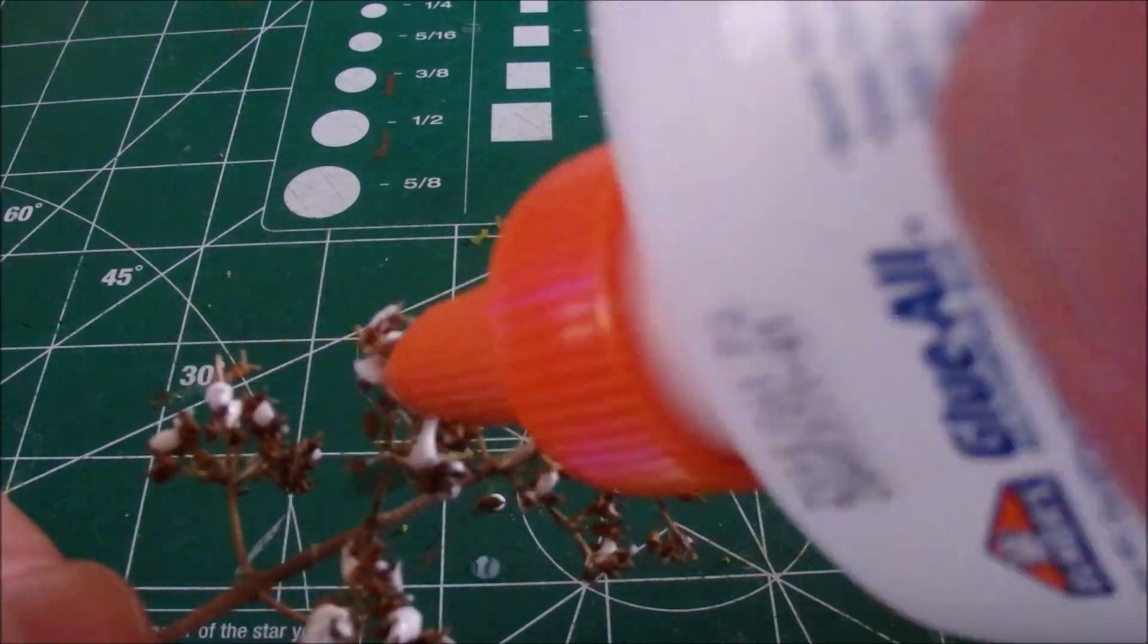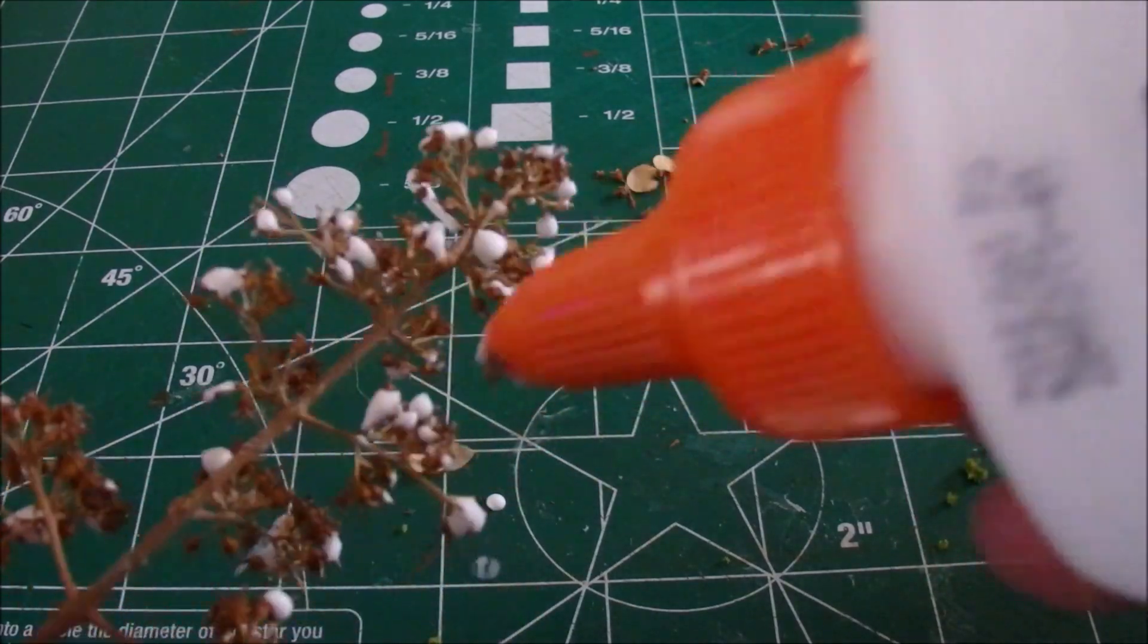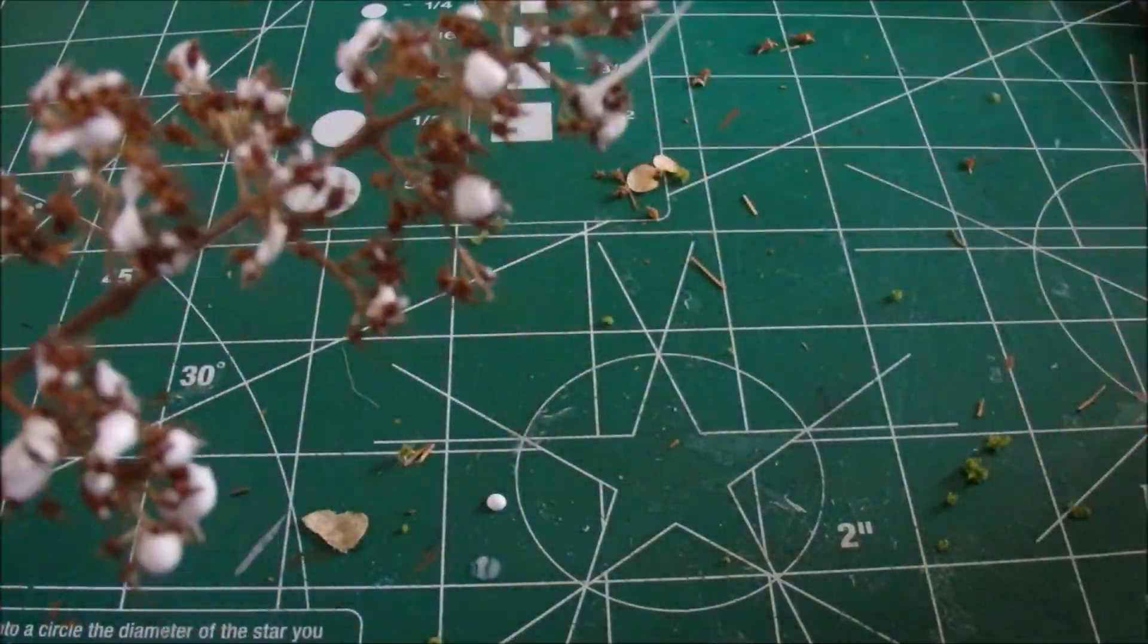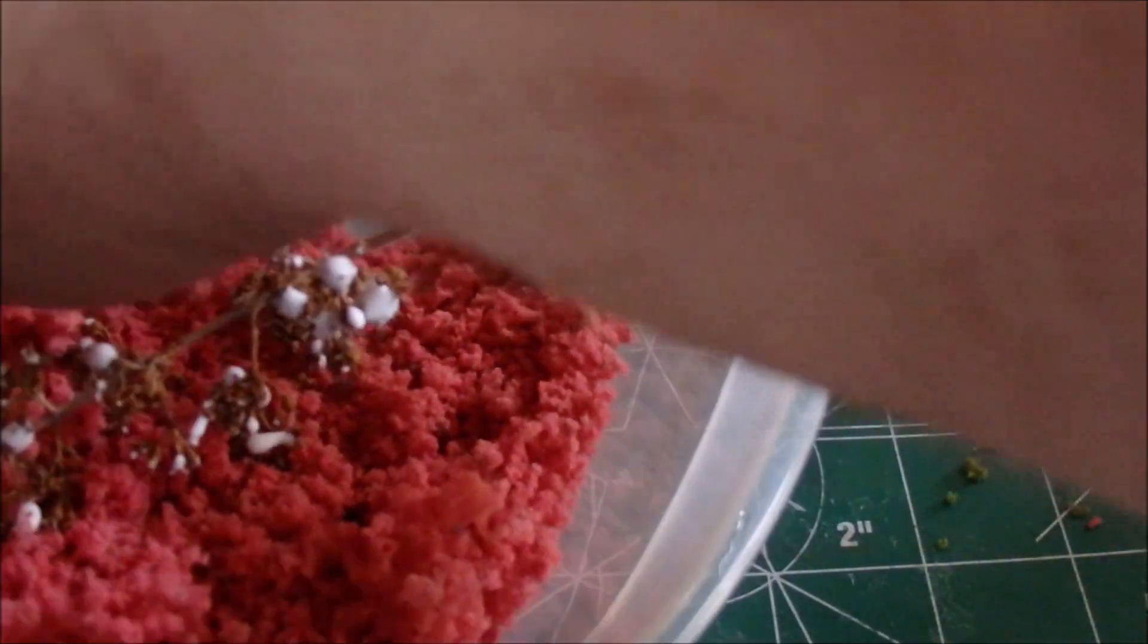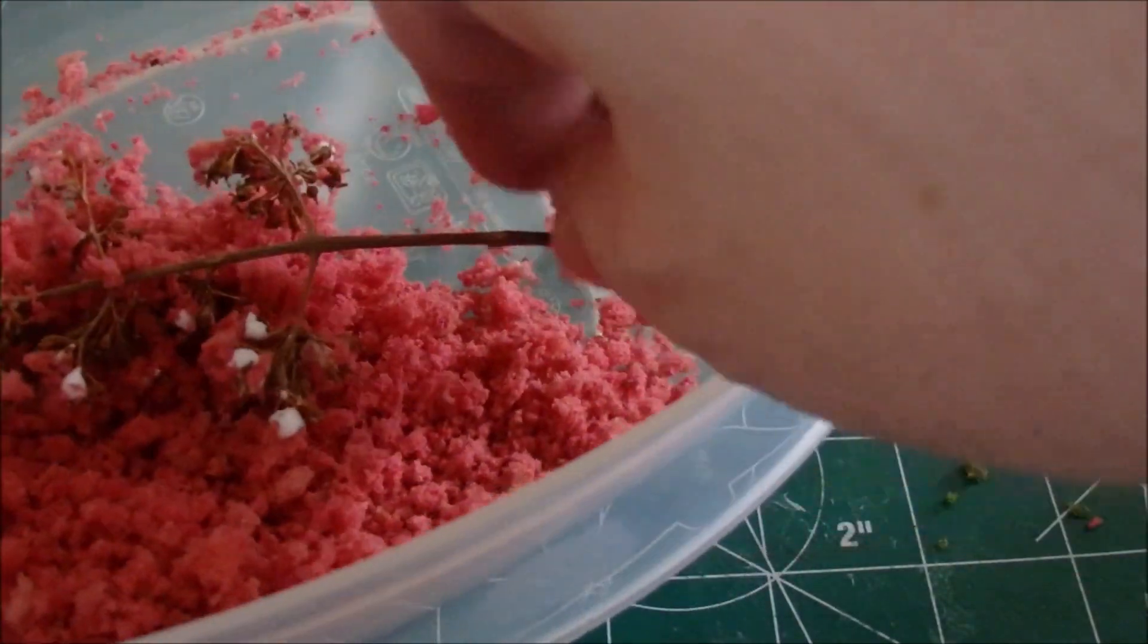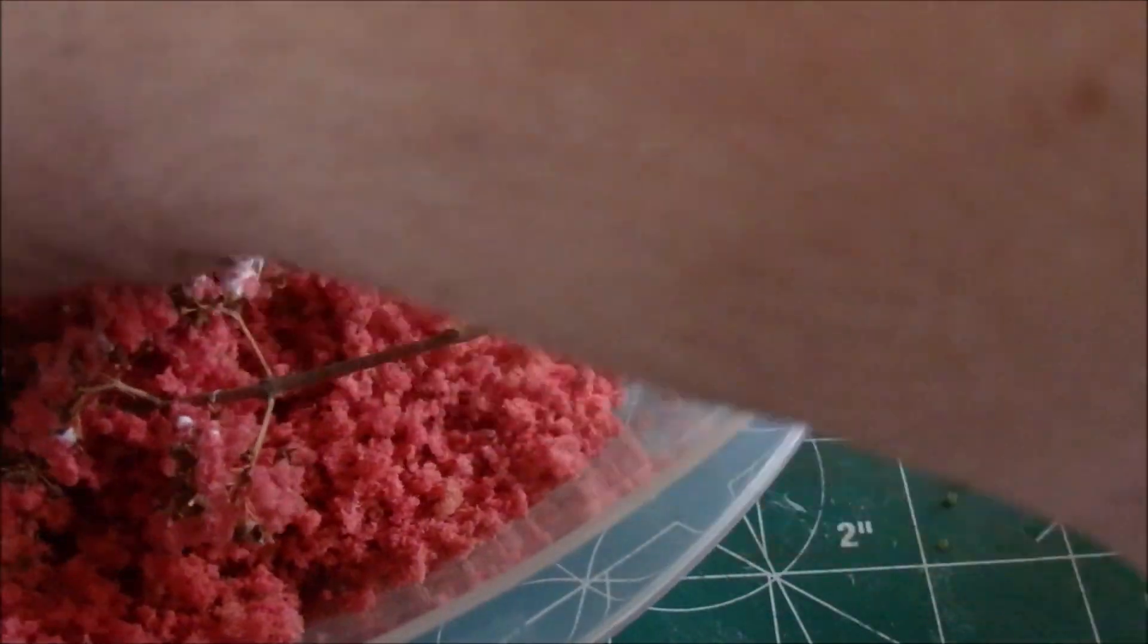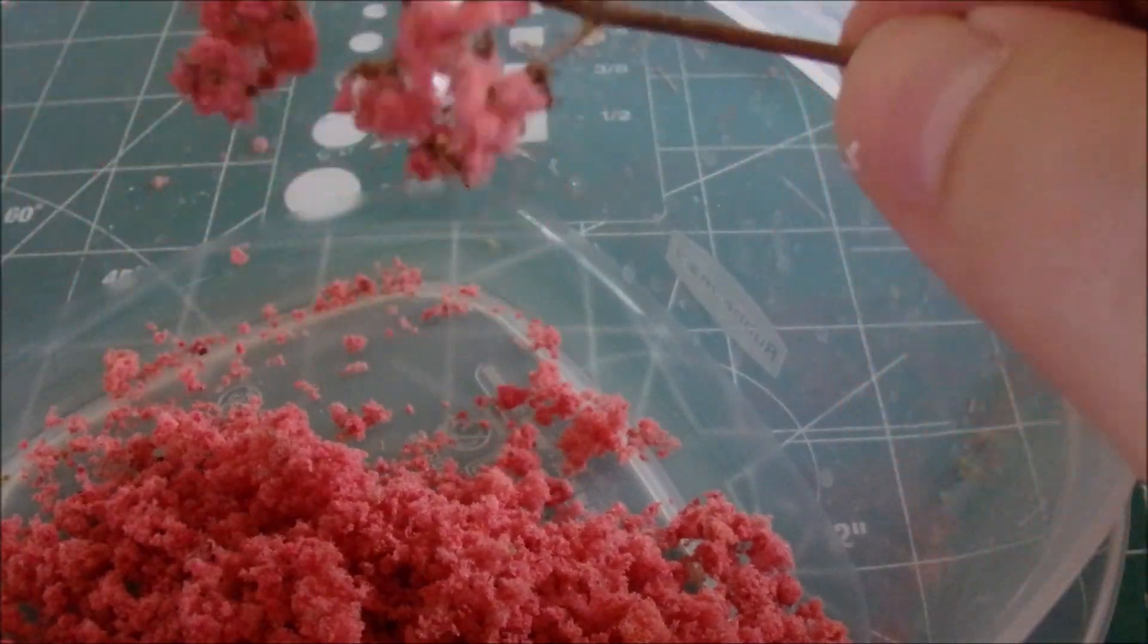This tree turned out looking like maybe some of the leaves had already fallen, maybe a little bit later fall look to it. Once you do get the foliage on there, the ground foam doesn't quite cover everything and not everything sticks on it so it's not quite as dense, not quite as heavy coverage of the foliage. As a result it looks kind of like it's lost some of its leaves already, but it's still kind of an interesting little look to it.